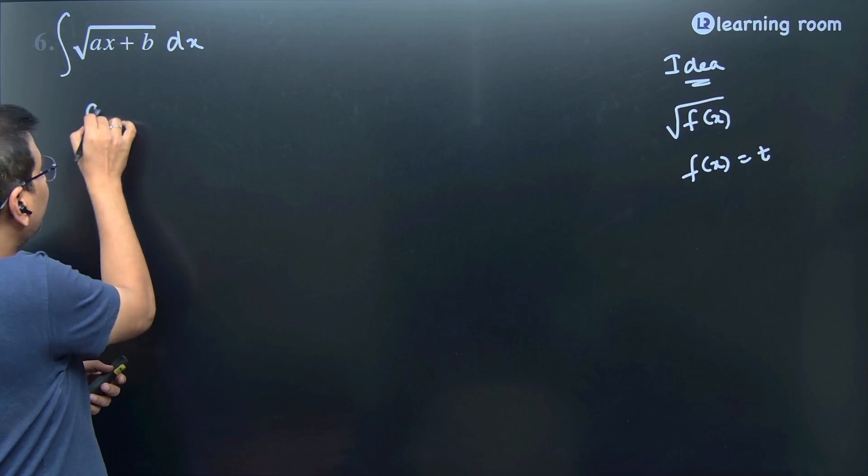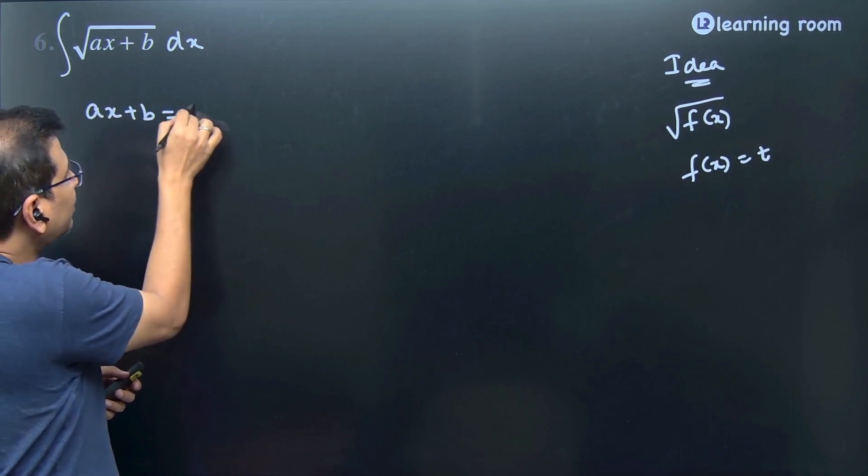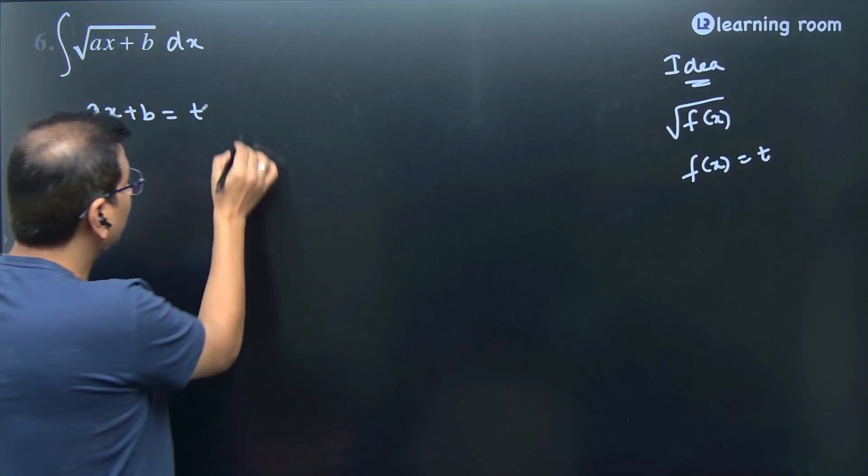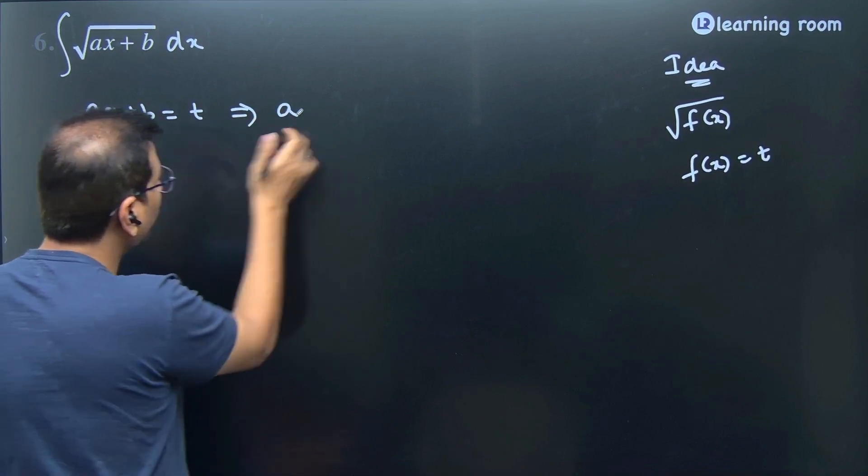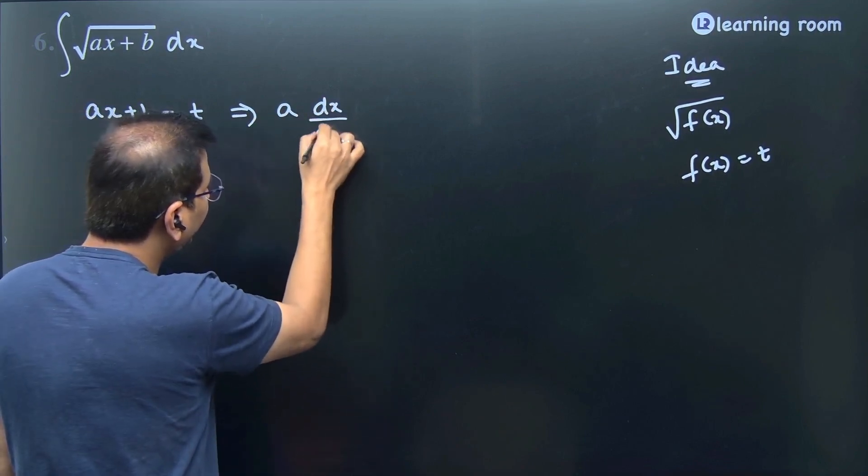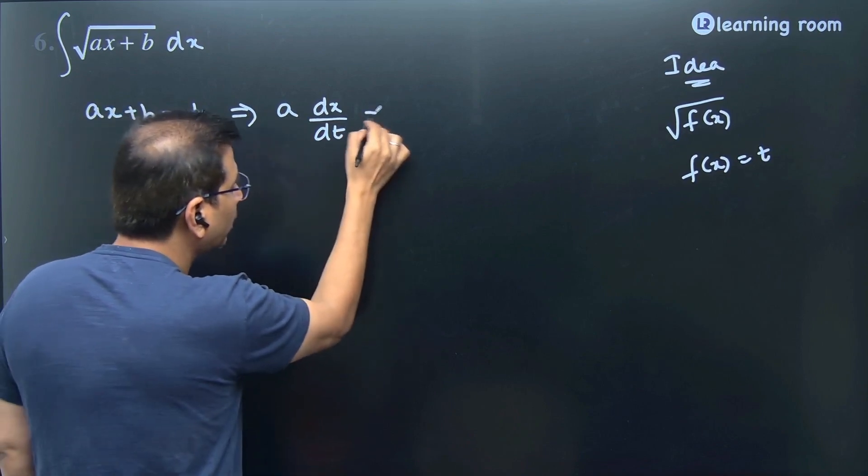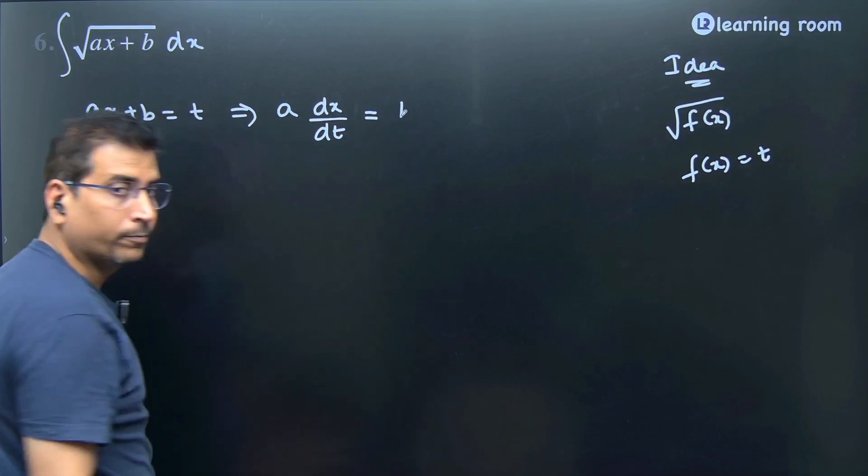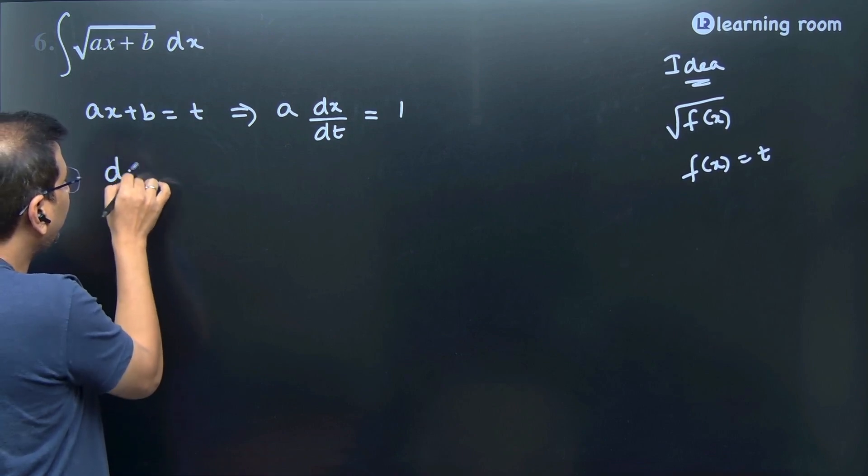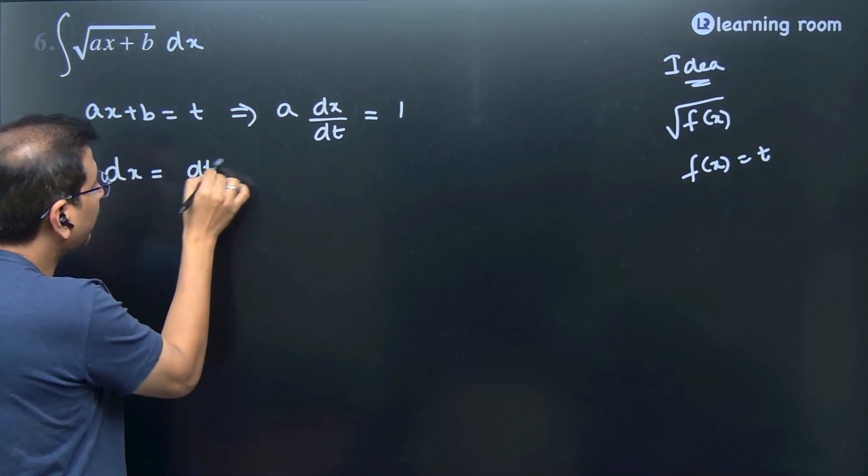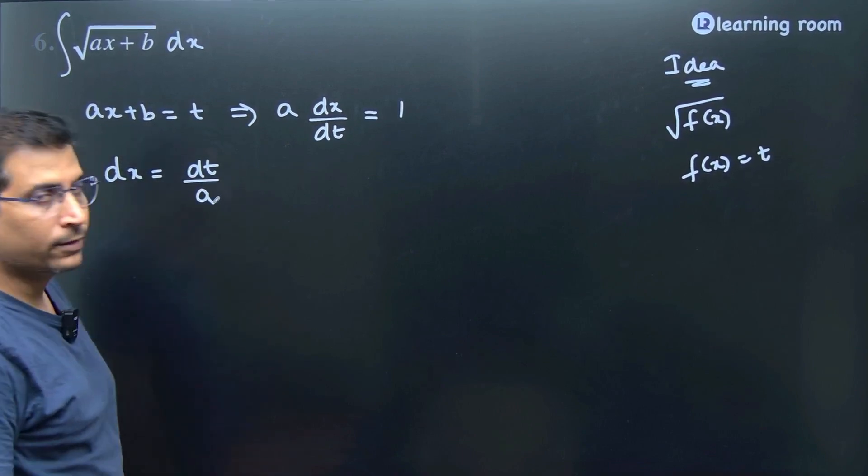We will substitute ax plus b as t. This implies differentiating on both sides: a times derivative of x, which is dx by dt, plus derivative of b, which is 0, equals 1. So dx will be equal to dt divided by a.